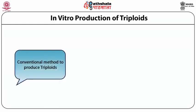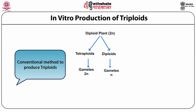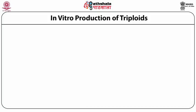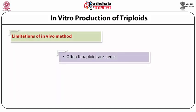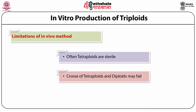The conventional method to produce triploids is that you first take a diploid plant, duplicate the chromosome number by treating with colchicine and get tetraploids. And then the tetraploid is crossed with the diploids. Because the gametes of tetraploids are 2N and the gametes of diploids are haploid, when they are crossed they produce a 3N triploid plant. That's the conventional method, but it has certain problems. Very often the tetraploids are sterile. Secondly, the crosses of tetraploids and diploids may often fail.